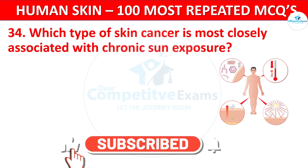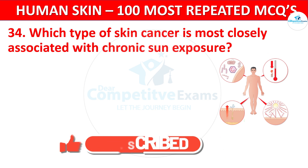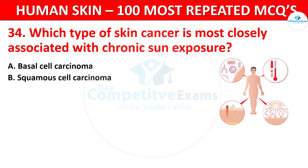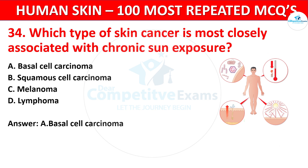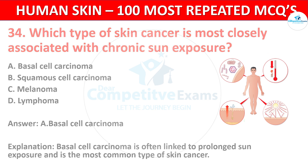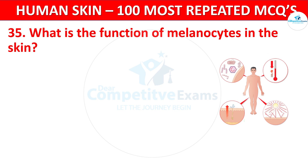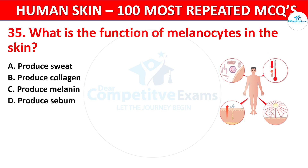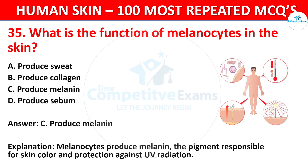Question 34. Which type of skin cancer is most closely associated with chronic sun exposure? Your options: Basal cell carcinoma, Squamous cell carcinoma, Melanoma, or Lymphoma. The correct answer is Basal cell carcinoma, which is often linked to prolonged sun exposure and is the most common type of skin cancer. Question 35. What is the function of melanocytes in the skin? Your options: Produce sweat, Produce collagen, Produce melanin, or Produce sebum. The correct answer is Produce melanin. Melanocytes produce melanin, the pigment responsible for skin color and protection against UV radiation.